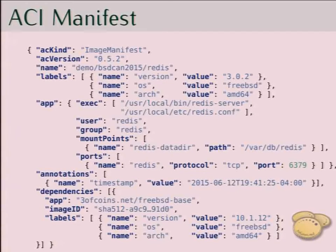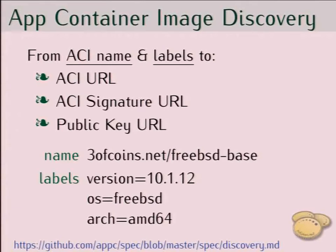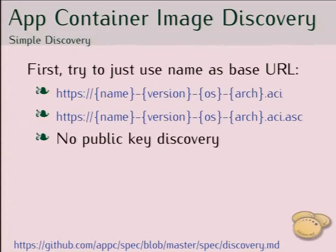Dependencies specify that this image depends on FreeBSD base, which means its rootfs will be unpacked on top of the FreeBSD base rootfs. The next part is discovery, which is the means to get from an ACI name and labels to the URL to download the image, download its PGP signature, and where to discover the public key for the signature. For example, to discover the FreeBSD base image with these labels, we first try simple discovery — we just try to resolve this as a base URL, adding version, OS, and architecture labels and putting an ACI extension at the end. There's no point discovering the public key this way because it would be published the same way as the image.